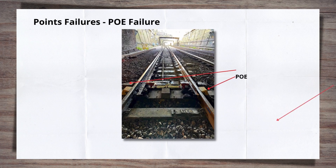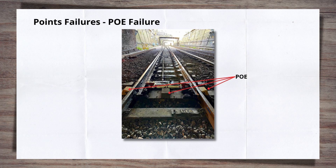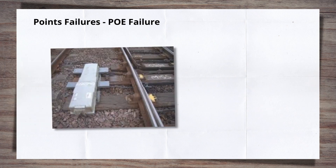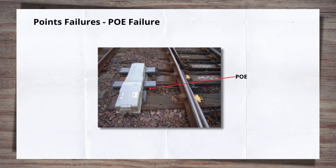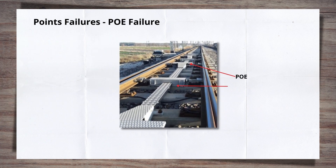POE failure. The switch rails in the points are moved by point operating equipment, POE. There are a few different types, but like most electrical and mechanical equipment, they are not immune from issues. Connections working loose or hydraulic hoses splitting are common causes of failure.